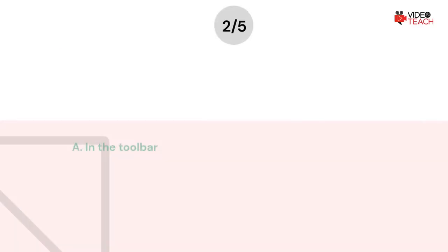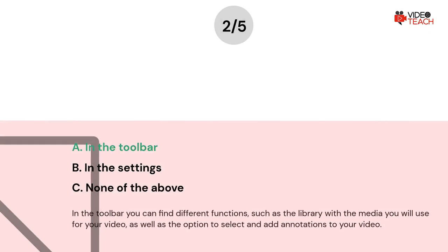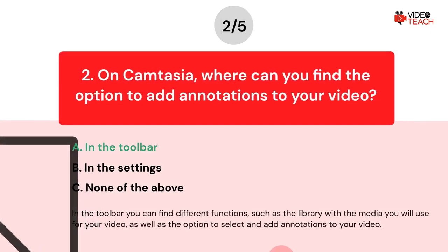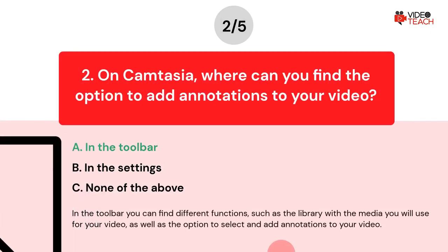The correct answer is Option A. In the toolbar, you can find different functions such as the library with the media you will use for your video, as well as the option to select and add annotations to your video.